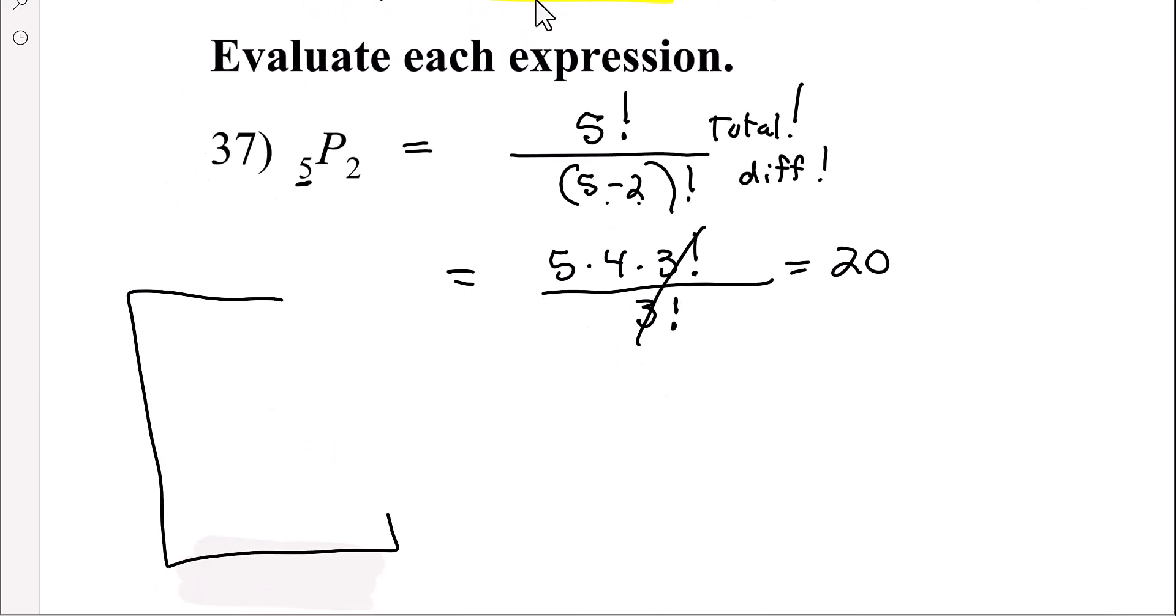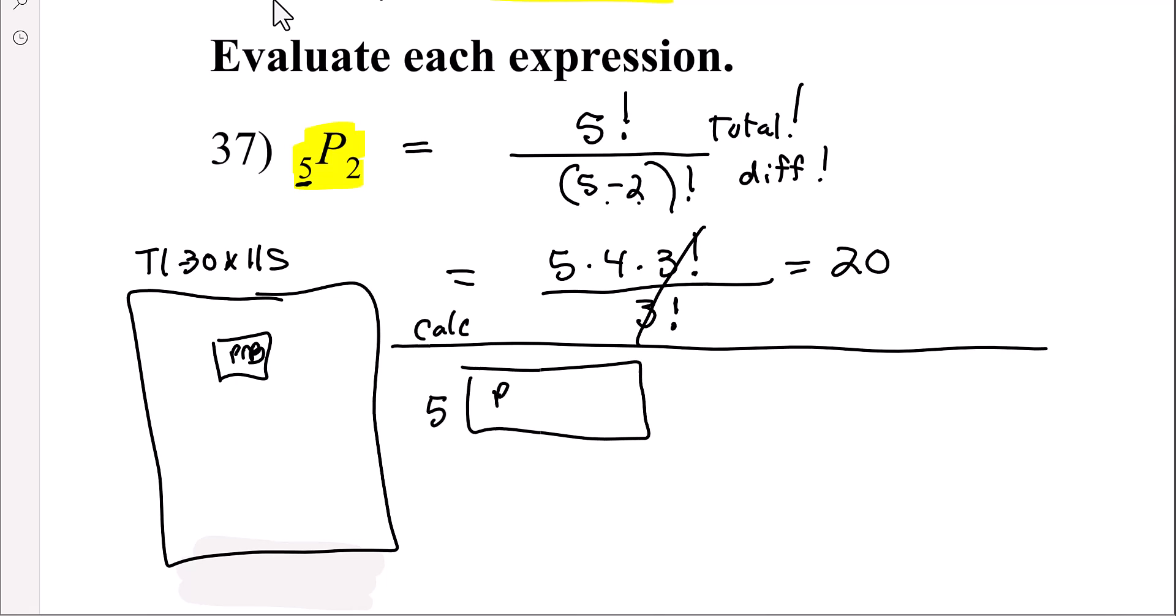For the calculator, since in our class we work with the TI-30 X Roman numeral 2 S, there is a PRB button and we're going to be using that button. For this problem, you're going to type 5, then you're going to depress the PRB button, and I think the first option is the permutation. The permutation looks like nPr. You're going to choose Enter, so 5 permutation button Enter, then you're going to type 2 and Enter again, and that should give you the result of 20.